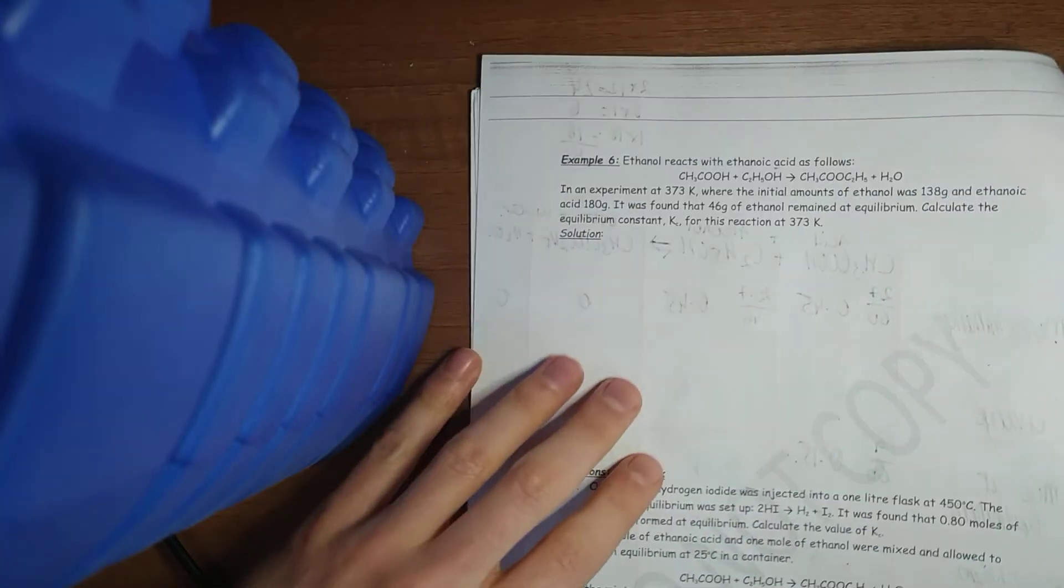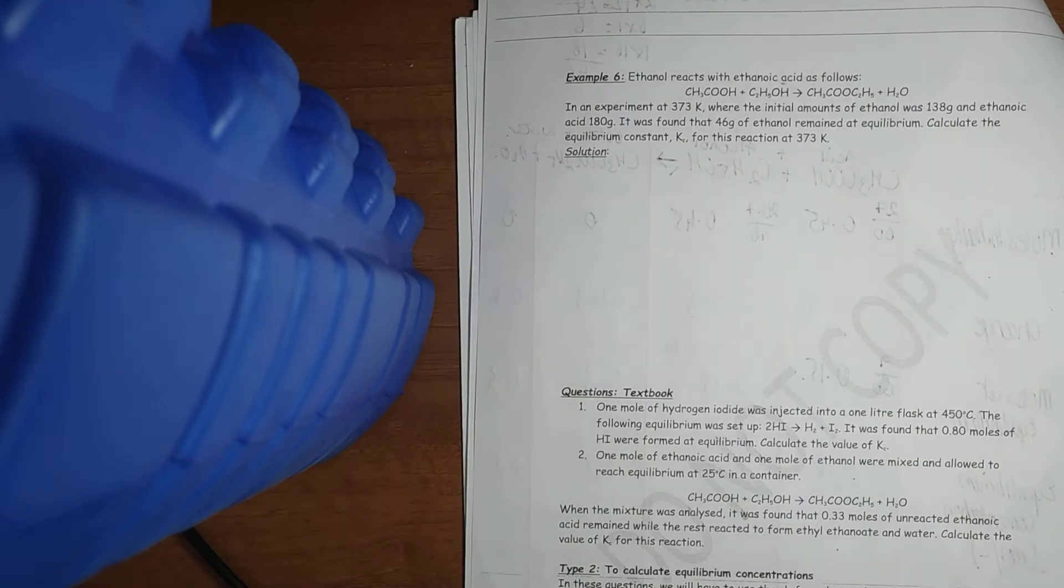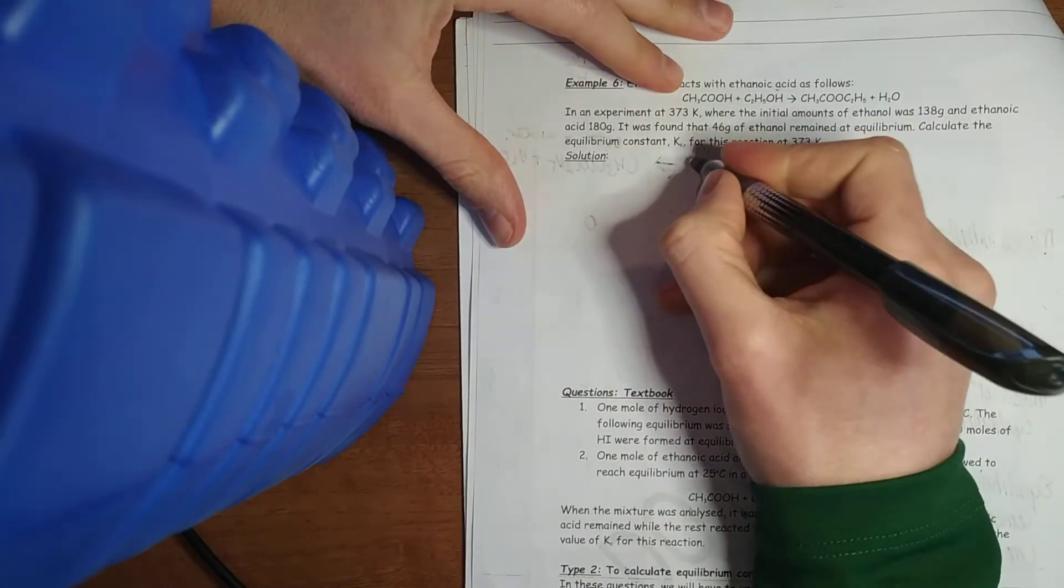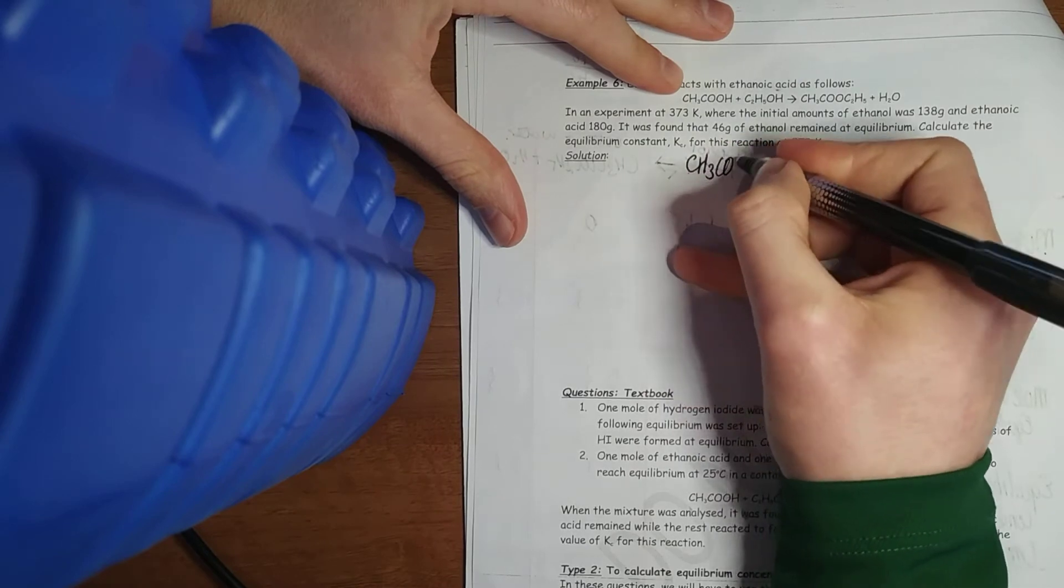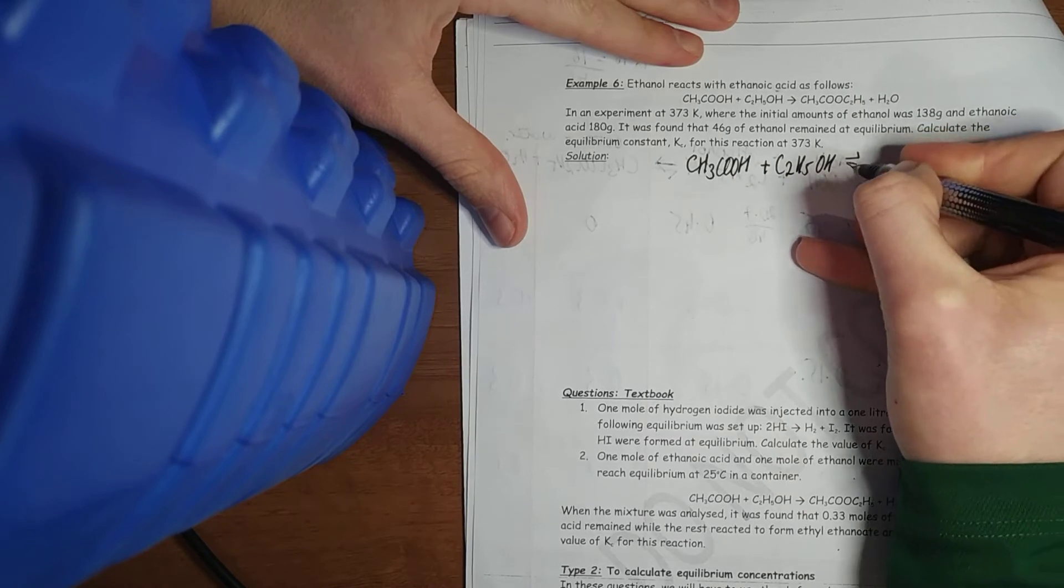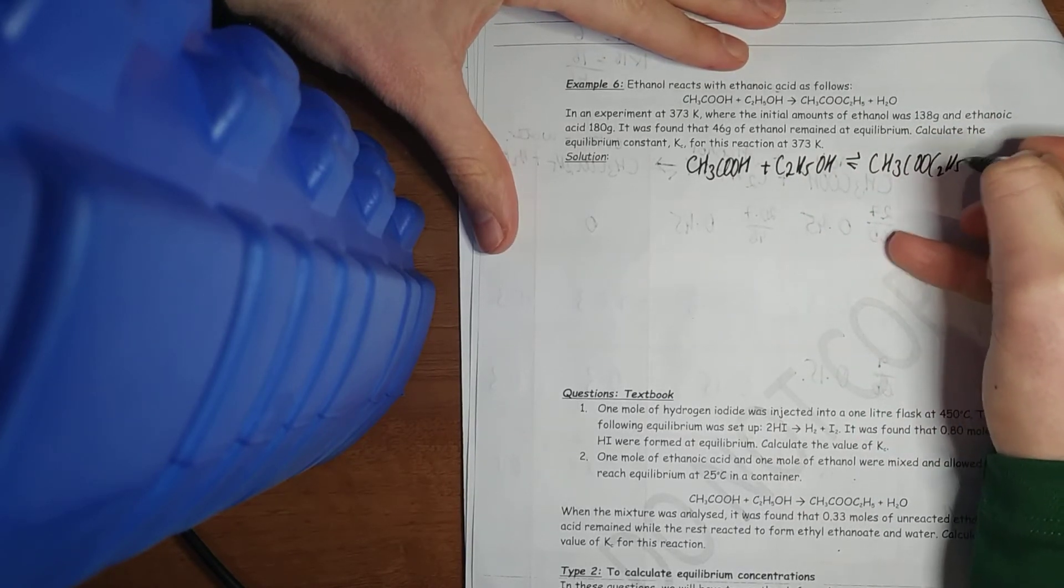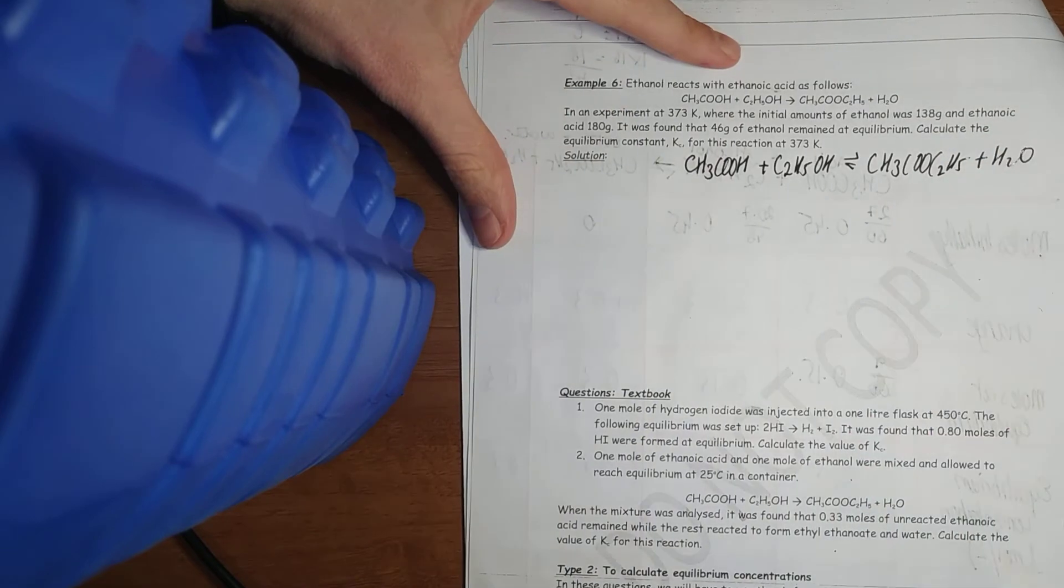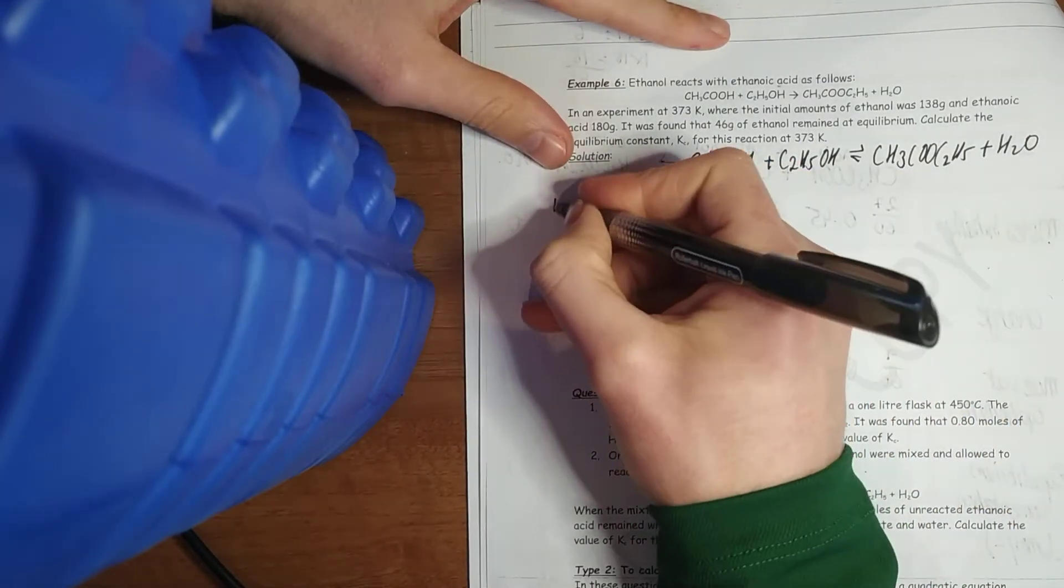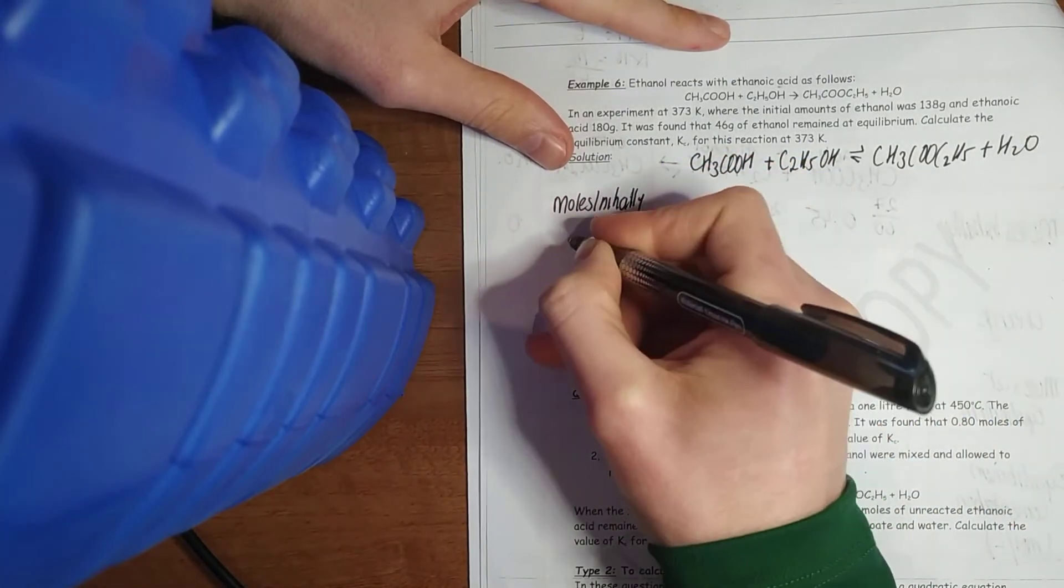Here's another one. Last example here. Number 6. So here I've got my equation. My CH3COOH. Same equation as before. My acid, my alcohol. Giving me my ester. My CH3COOC2H5. And my water. My H2O. There's my temperature. Because KC is temperature dependent. Put in your heads. Moles initially. Change.